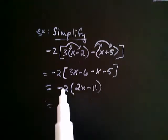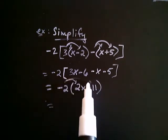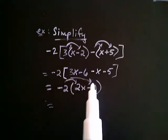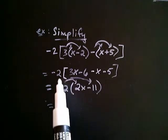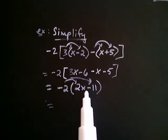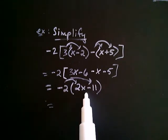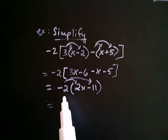And now, finally, it's time to distribute this negative 2. So, you don't want to distribute the negative 2 earlier because there was still work to be done inside the brackets. But now that I've completely simplified inside the brackets, which became parentheses. Once this is completely simplified, now it's time to distribute that negative 2.